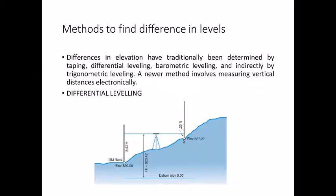Once you place the instrument, the first reading you take is on the backside — the point whose reduced level is known, called the benchmark. In this case, a rock placed here is your benchmark whose reduced level is 820. When you place the leveling staff on that point and note the reading, you add it to the benchmark value because the height of the instrument is always above the benchmark. So 820 plus 8.42 gives 828.42 as your height of the instrument from the datum.